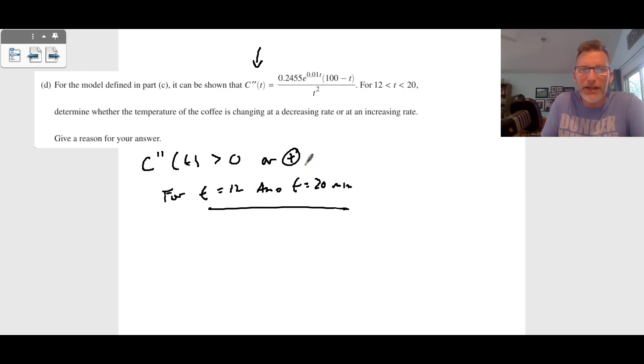So if you graph that out, it is positive for every single one of those, which means it is changing. It is changing at an increasing rate over that time, at an increasing rate since the C prime prime of T is greater than zero.